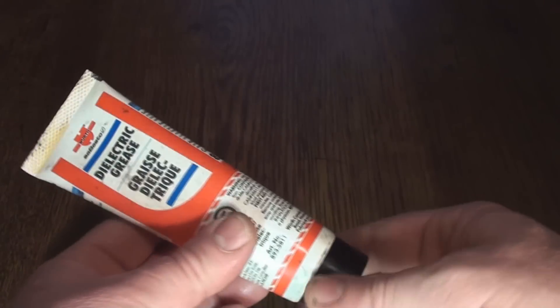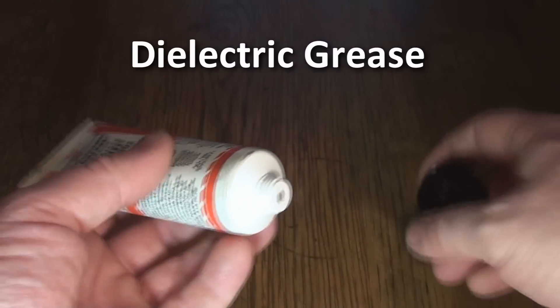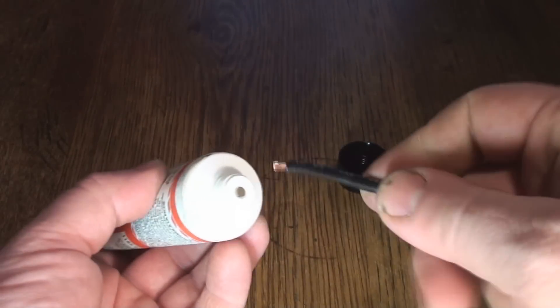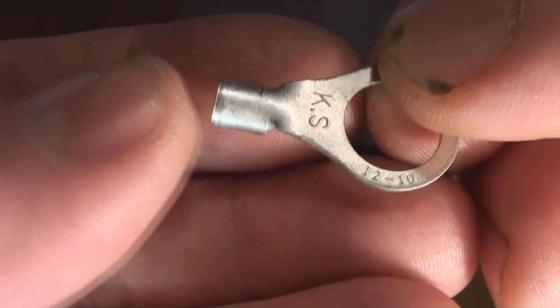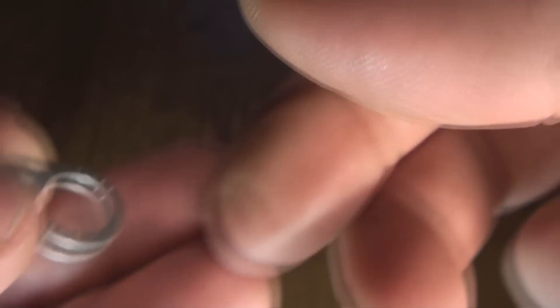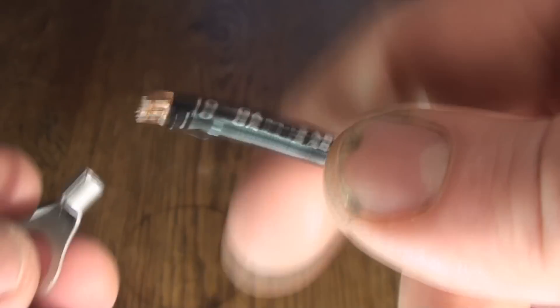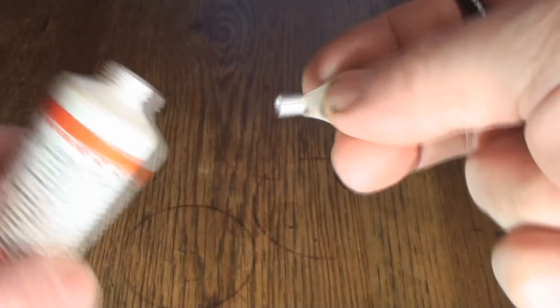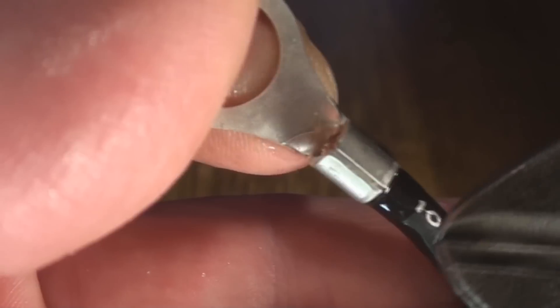So at this point to dip it in some dialectic grease is always a good idea. So you just want to take the end of that and there you go. Okay, now that's been dipped. Okay, so there we have it marked 12 and 10 gauge and we know we're using a 10 gauge wire because it says right there. Now I've dipped this end. It wouldn't hurt to dip this end in. Just put a little shot of grease up in the middle of that. There it is.